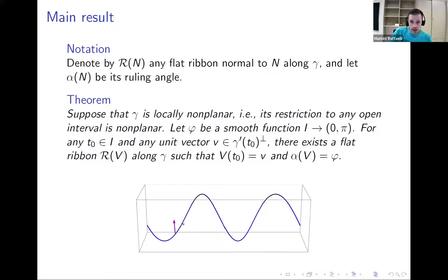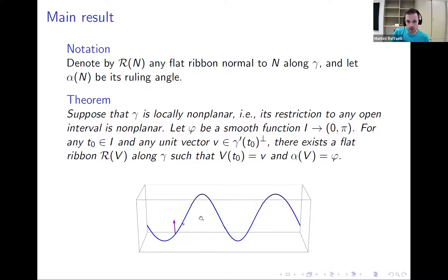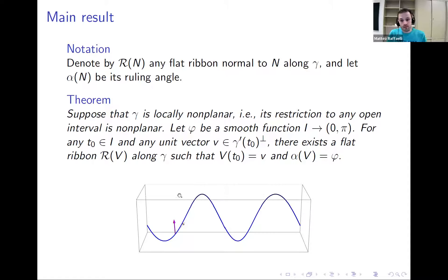Here is the new theorem, valid under the assumption that the curve is locally non-planar, meaning its restriction to any open interval is non-planar. The theorem states: if you choose a smooth function φ with range in (0, π), then for any normal vector chosen at some point of the curve, there exists a flat ribbon along the curve having ruling angle equal to φ, such that its normal vector at that point is exactly the chosen vector. This result follows from the theory of ordinary differential equations — by solving an ODE you can construct the solution, in most cases numerically, though in some cases explicit solutions exist.